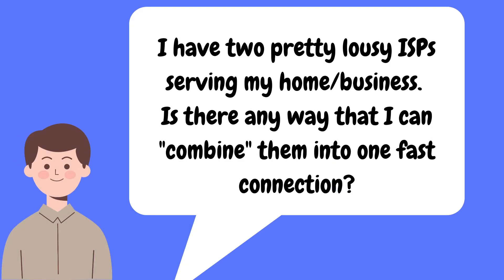Here's not a real comment I got, but this is what a lot of people want to know — a very common use case: I have two pretty bad ISPs. This is a frequent issue in the country I live in, serving my home or business. Is there any way that I can combine them into one fast internet connection? Sometimes I call this mushing — can you mush together two internet connections to make one internet connection?